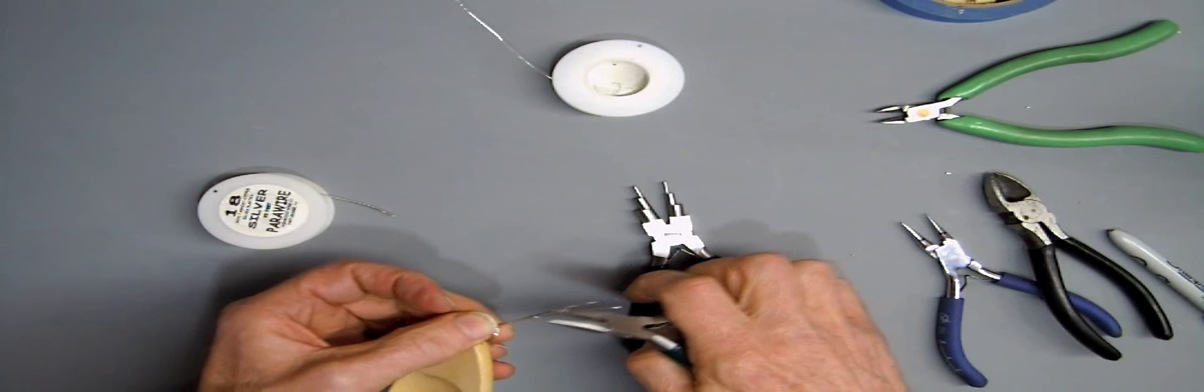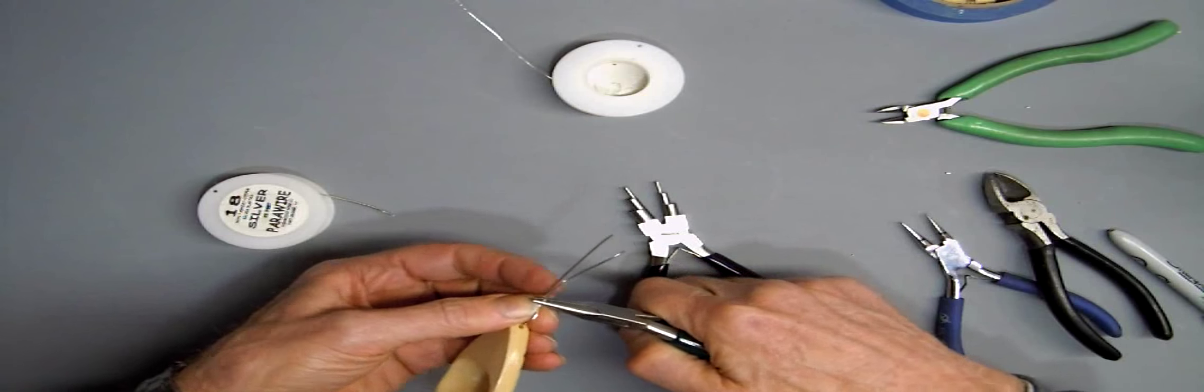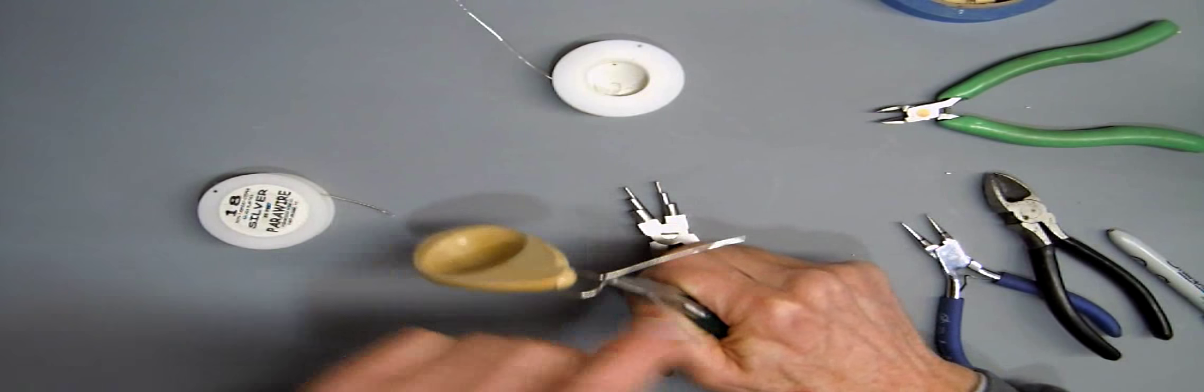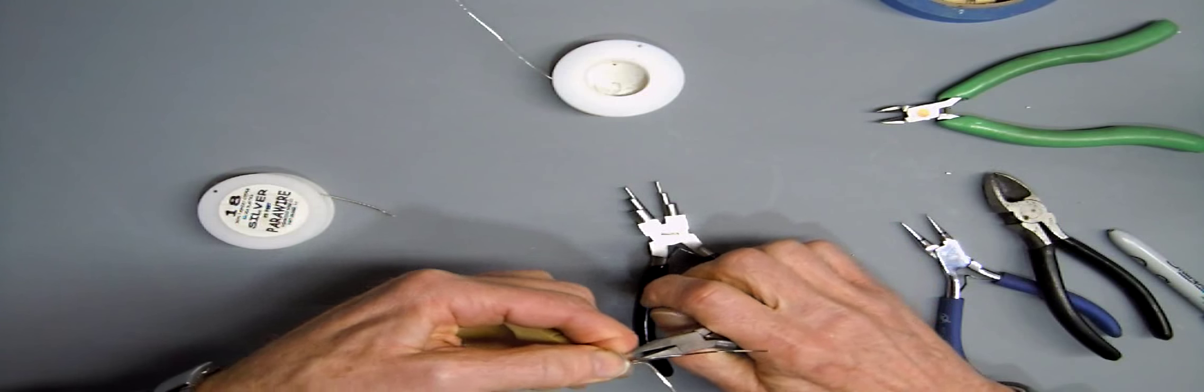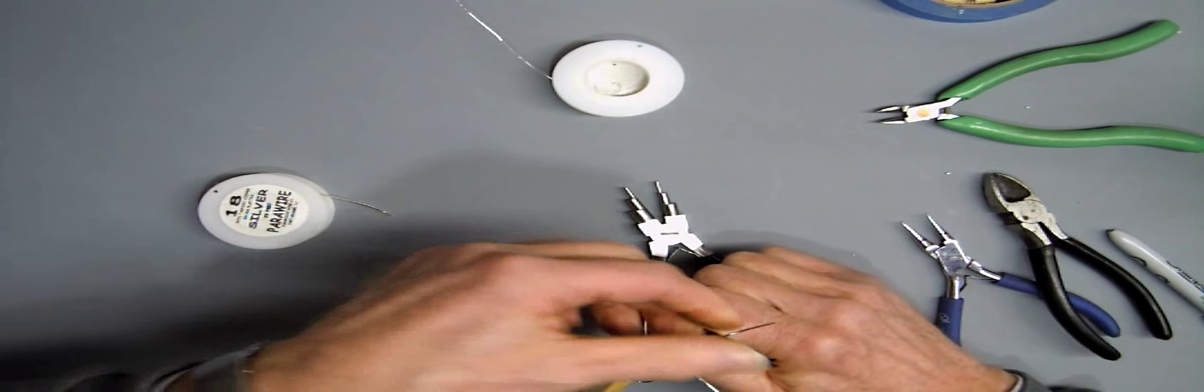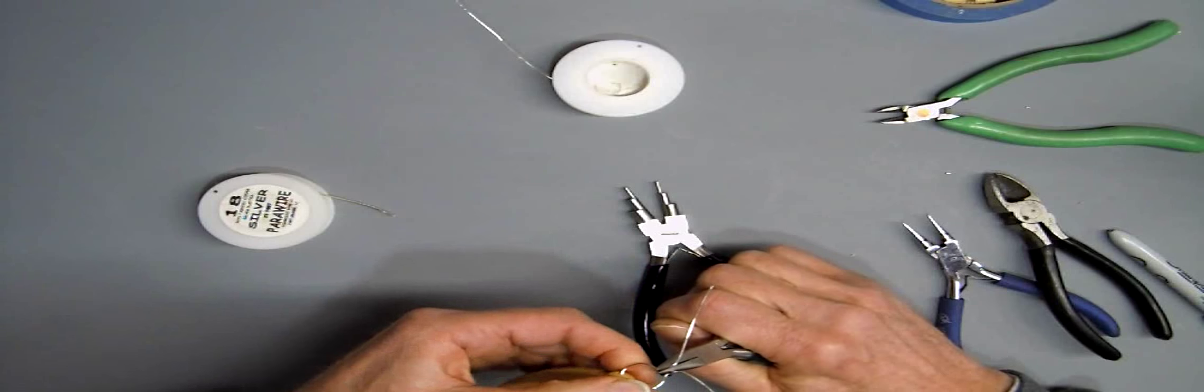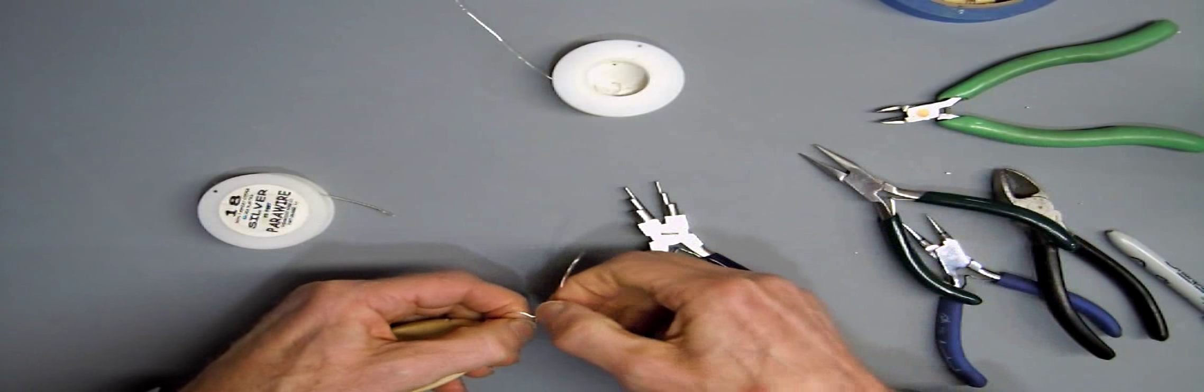Using flat pliers, we're now going to bend the wires out. This leaves a short section, about a quarter inch long, where they're parallel to one another.